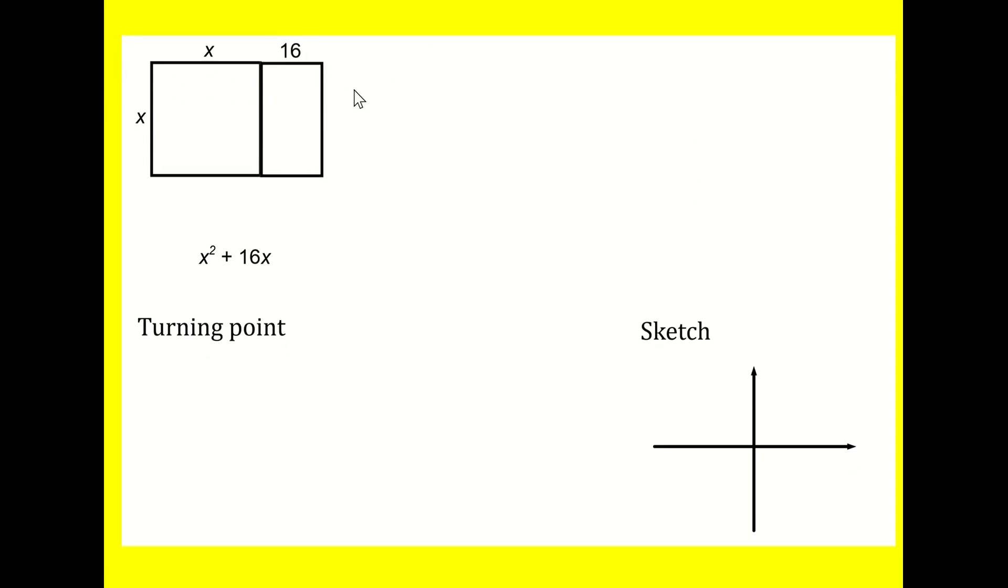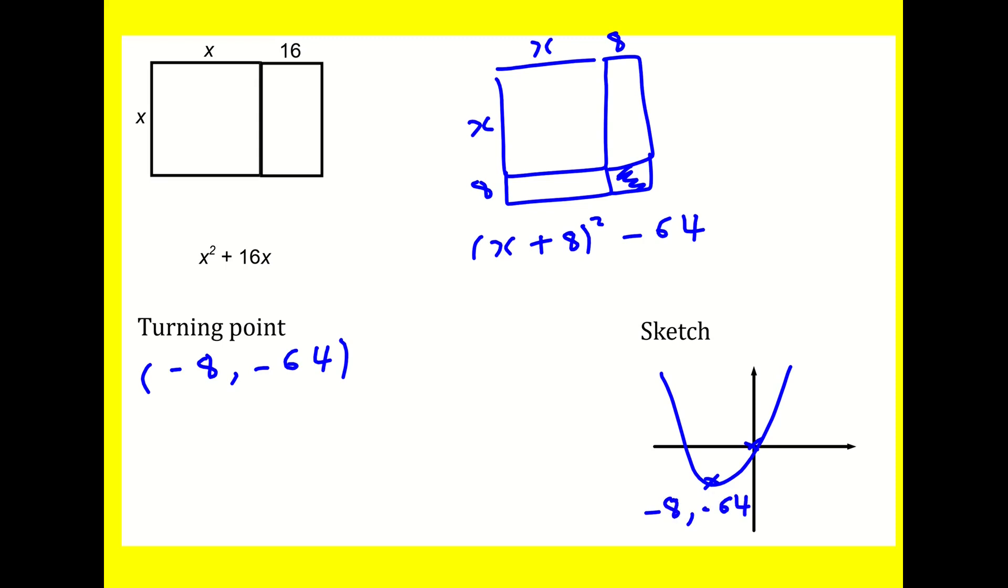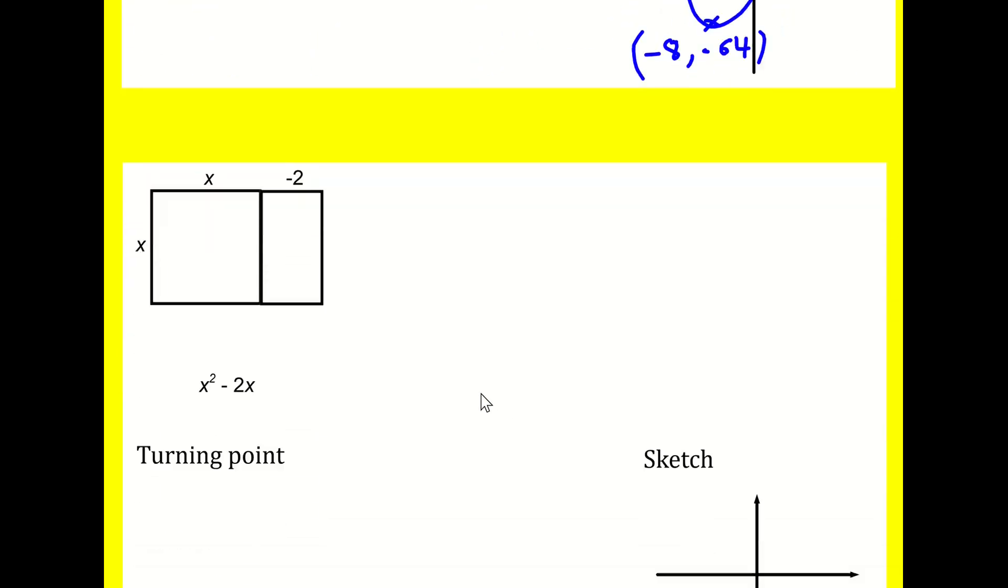I'm taking away the scaffolding. So try this one. It's getting a bit repetitive, perhaps. But hopefully, you're getting the idea. So this time, I've got my square. I'm going to split it into two. X plus 8 squared. But I need to subtract that. 64. And that is in completed square form. Minus 8, minus 64. All right.